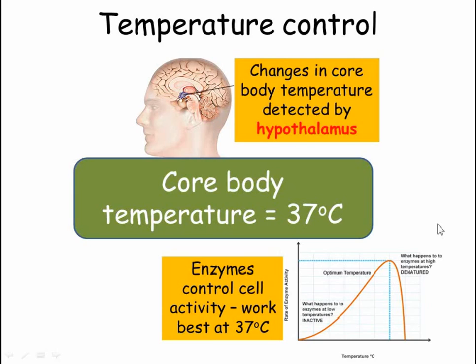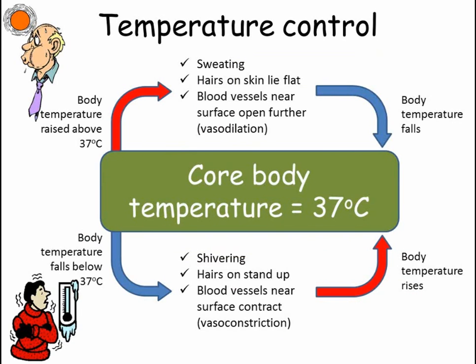If something causes body temperature to increase slightly above 37 degrees, it's detected in the hypothalamus in the brain. The body then does several things to try and lose more heat: you start to sweat, the hairs on your skin lie flat, and your blood vessels vasodilate. This means more blood is moved towards the skin surface where the heat can be lost to the air more quickly. These things work to bring the body temperature back down to 37 degrees C.